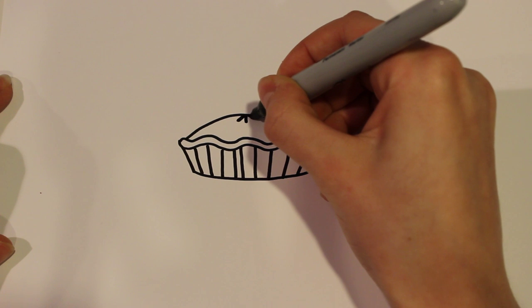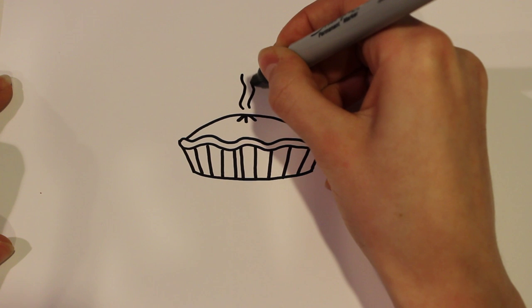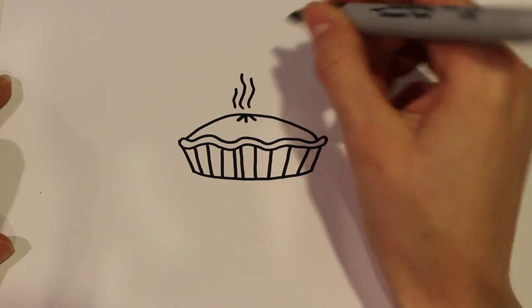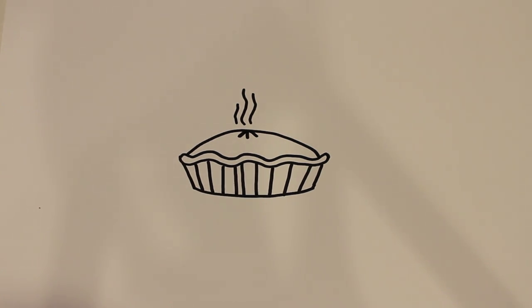three fork marks right at the top and then some steam if you want and there you have it that's how to draw a pumpkin pie. Thanks for watching and be sure to subscribe to my channel for lots more drawing tutorials.